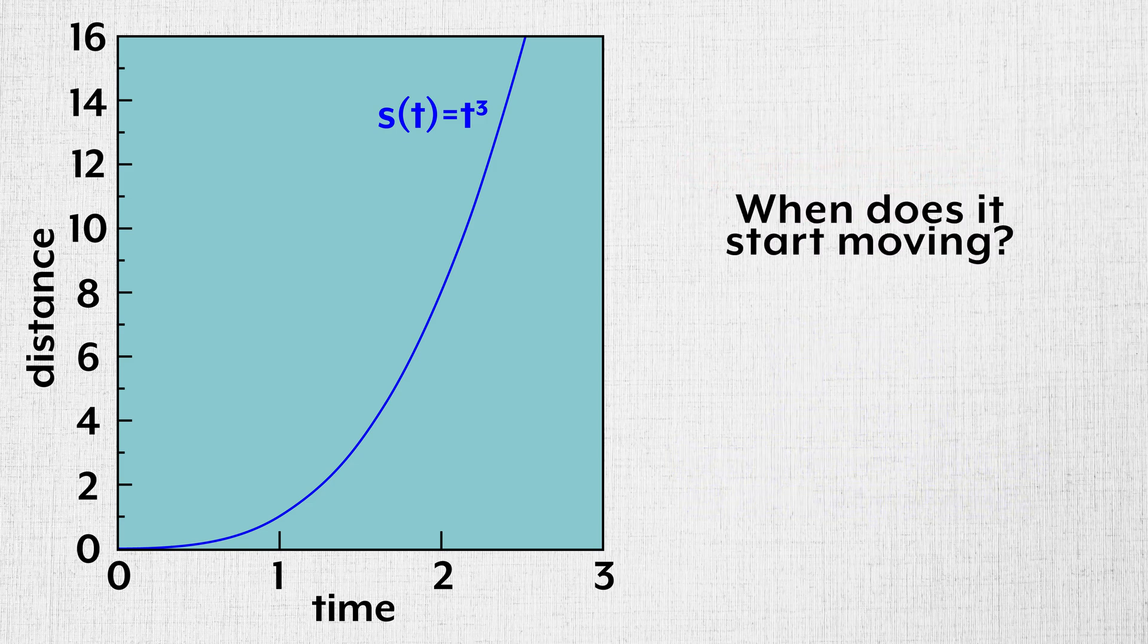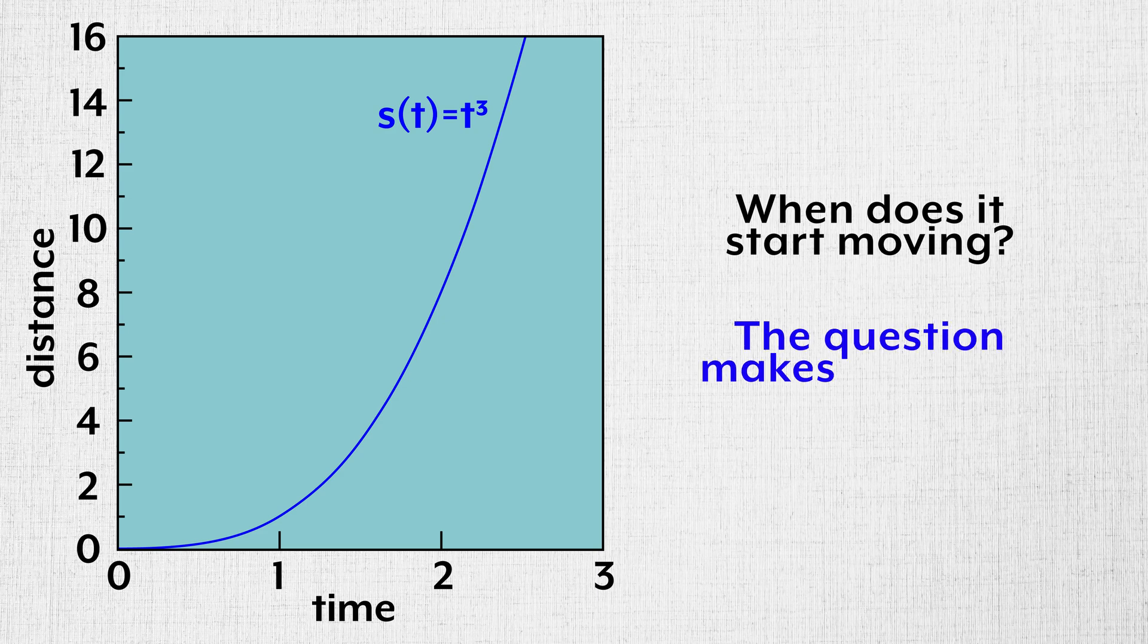And the question, when does it start moving, references the idea of change in a moment, which doesn't exist. So the question makes no sense. From the usual perspective, Grant's argument makes perfect sense. But is there a different way to look at the paradox where the questions are valid and have exact answers?